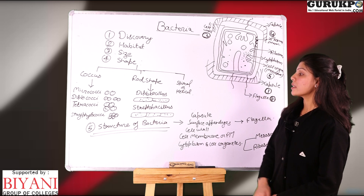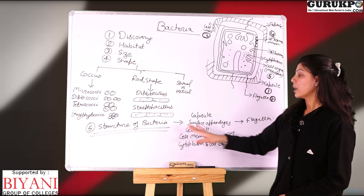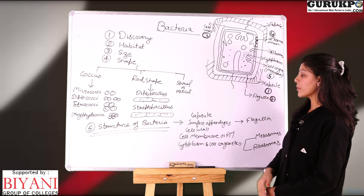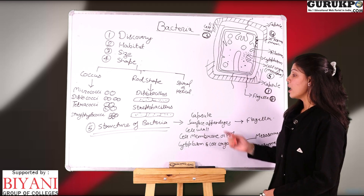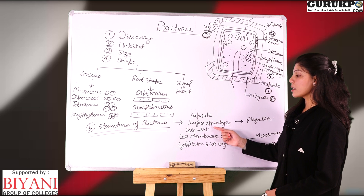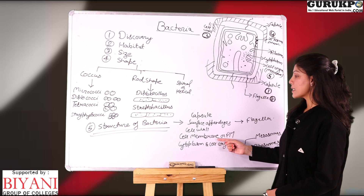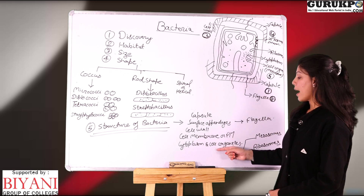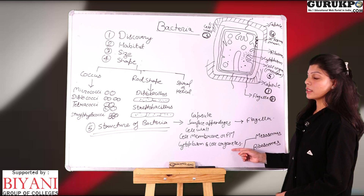Fifth is the structure of a bacterial cell. The main structural features of a bacterial cell are: capsule, surface appendages, cell wall, cell membrane or plasma membrane, and cytoplasm and cell organelles.